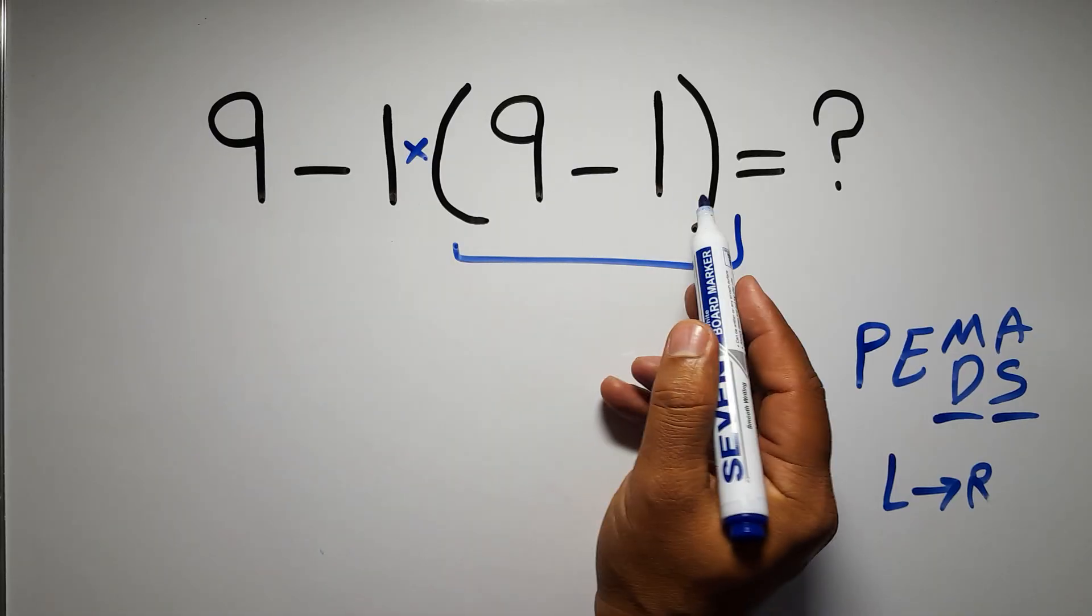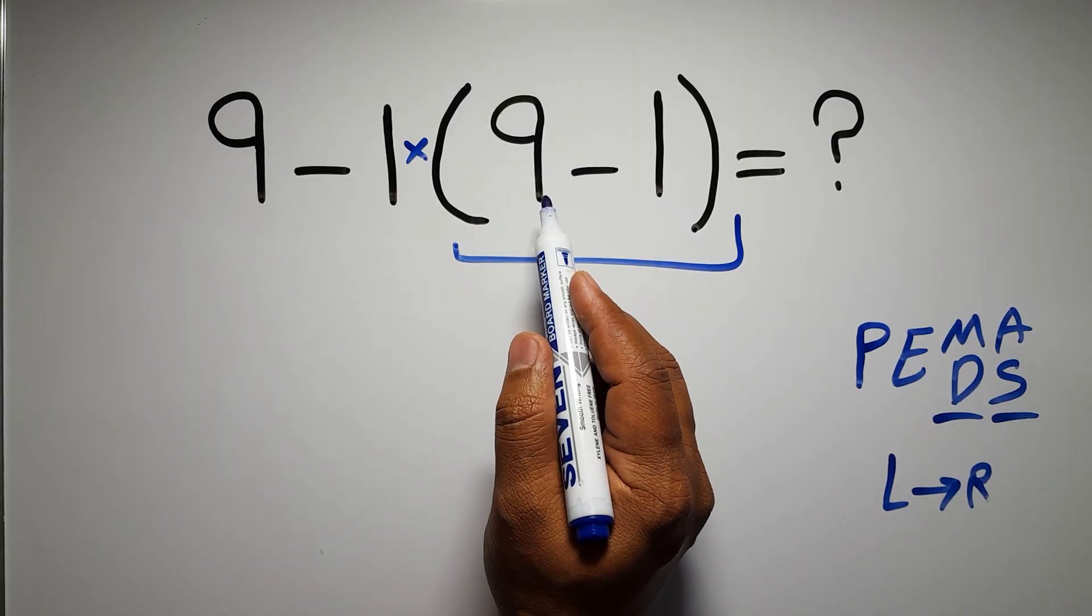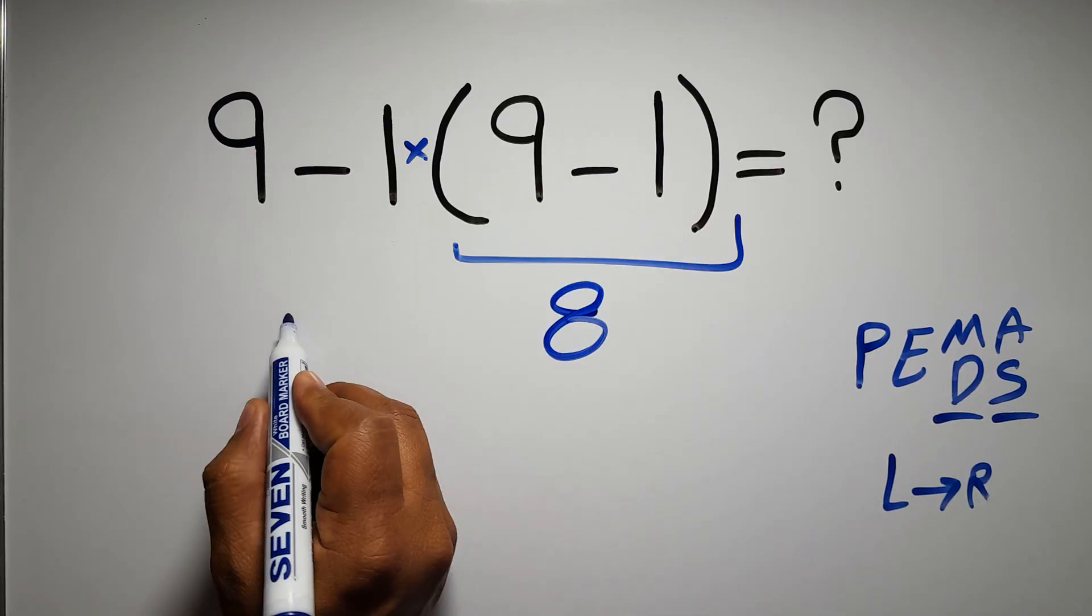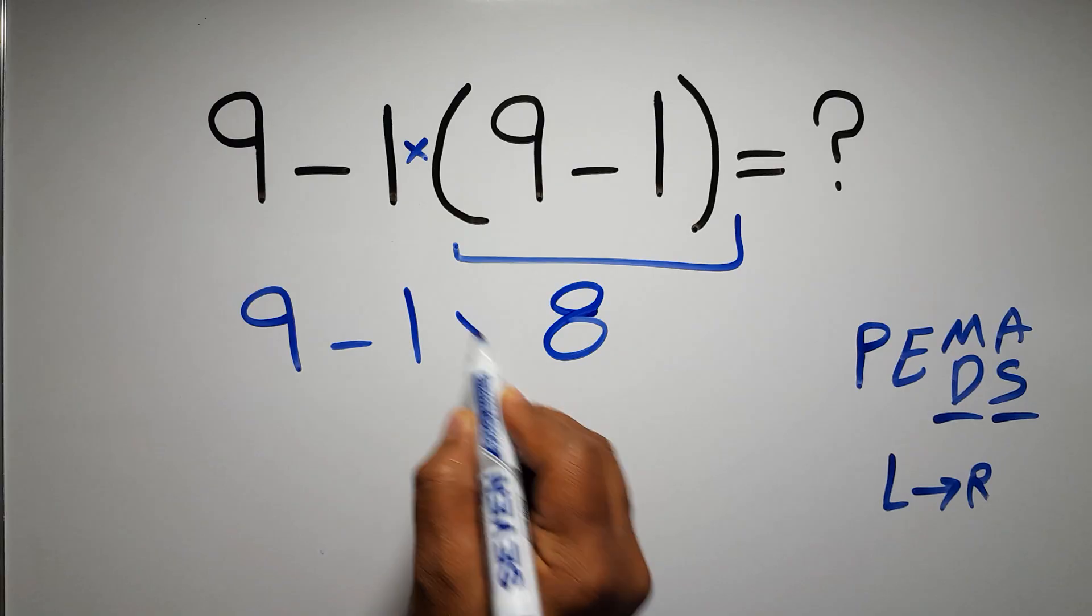So first we have to do these parentheses. Inside these parentheses, we have 9 minus 1, which equals 8. So 9 minus 1 times 8.